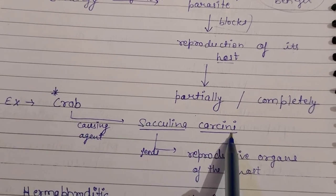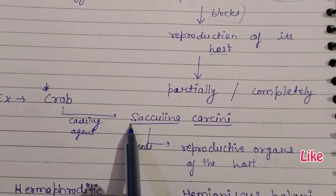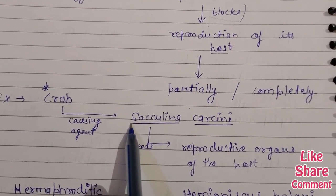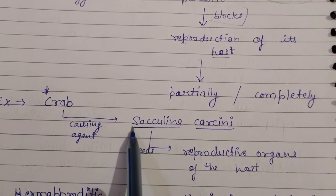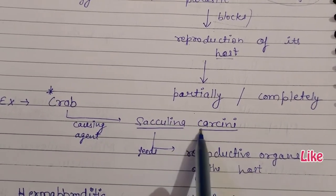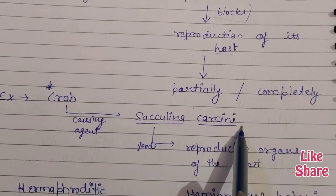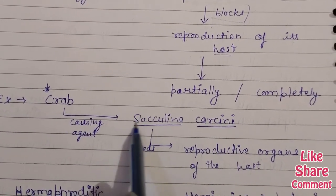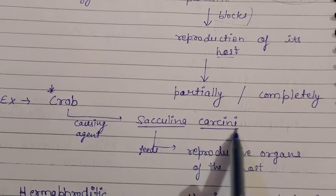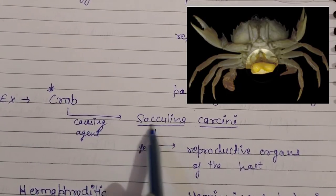Regarding the scientific name: if you type it on a computer, write it in italics. If writing by hand, underline it. In the binomial name, the genus — Sacculina — has its first letter capitalized, and the species — carcini — starts with a small letter.